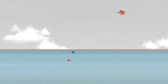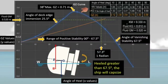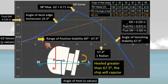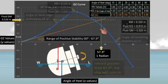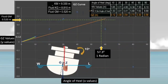Let's proceed with a calculation using this GZ curve constructed in my previous video. If you want to see the full details on how to construct this GZ curve, kindly visit the link in the description below. At a 10-degree angle of heel, the GZ value is 0.12 meter — so the ship created a righting lever of 0.12 meter, and this is the point in the graphical representation.